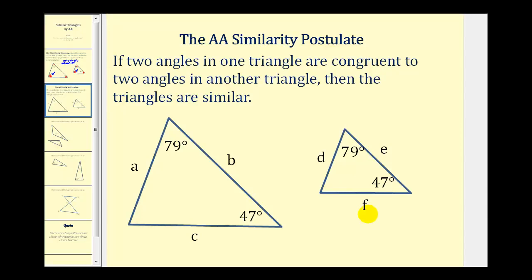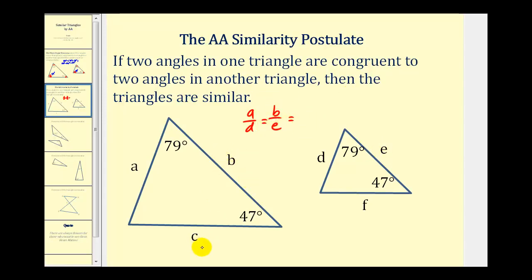Remember, if two triangles are similar, corresponding angles are congruent and corresponding sides are proportional. So just to review, the ratio of A to D would have to equal the ratio of B to E, which would have to equal the ratio of C to F.